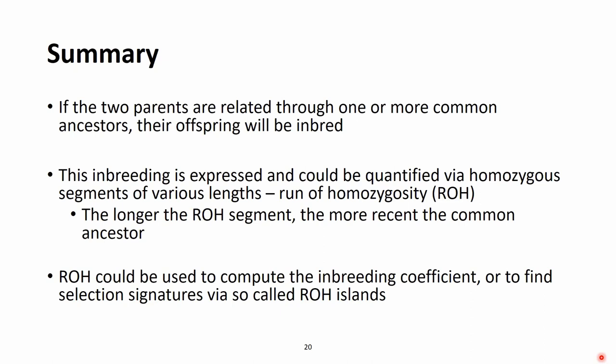Summarizing the presentation on runs of homozygosity: if two parents are related through one or more common ancestors, the offspring will be inbred. Inbreeding can be expressed via runs of homozygosity (ROH), which are homozygous segments of various lengths. The longer the ROH segment, the closer the common ancestor was in the pedigree — very long ROH segments suggest a common ancestor just a few generations back, while shorter segments indicate an ancestor further back in the pedigree.